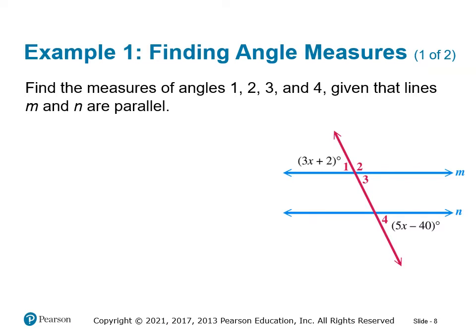Now that we have all these angle relationships, let's solve a problem. We're given angle one equals 3x + 2 and angle four equals 5x − 40. We know that angle one equals angle three — these are vertical angles. We also know that angle one equals angle four because they are alternate exterior angles, and that angles one and two are supplementary. So angles one, three, and four are all equal. We're trying to find the measure of all four angles, not just solve for x.